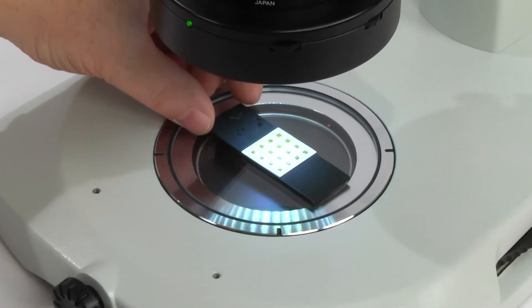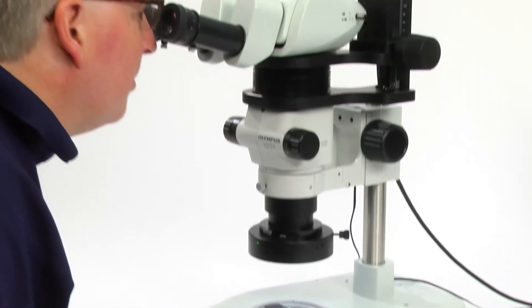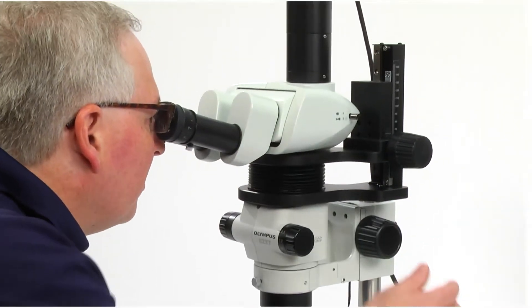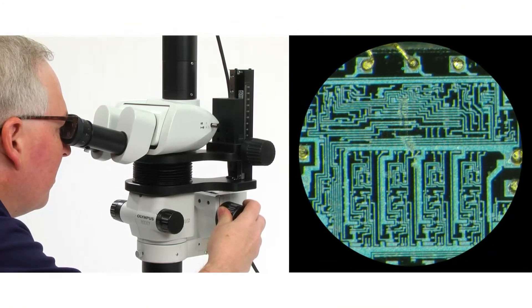First, place a sample on the stage plate. While looking through the eyepieces, bring the image into focus using the microscope focus knob.